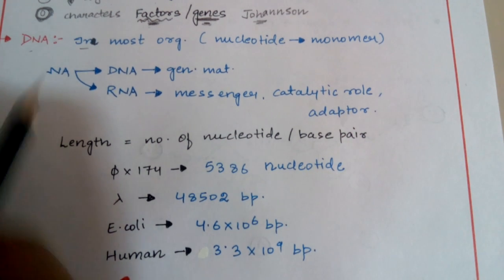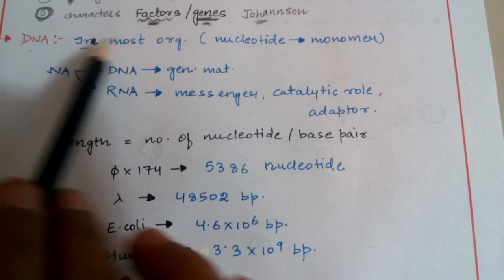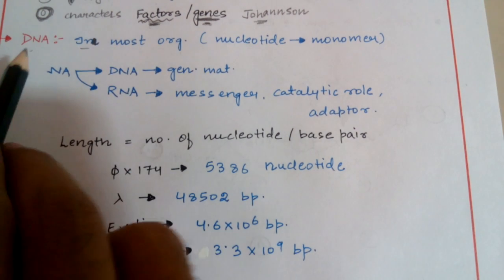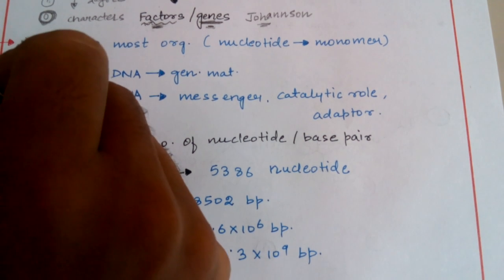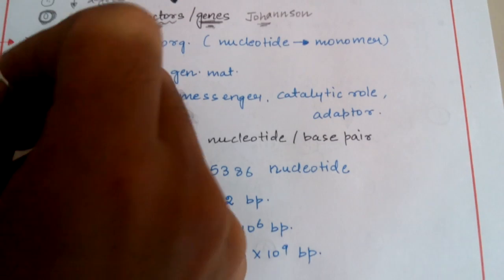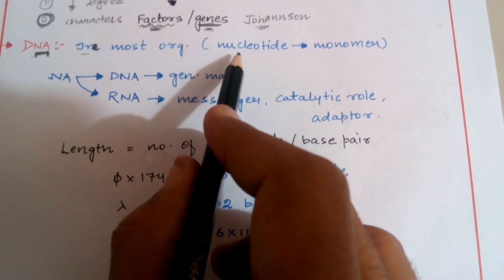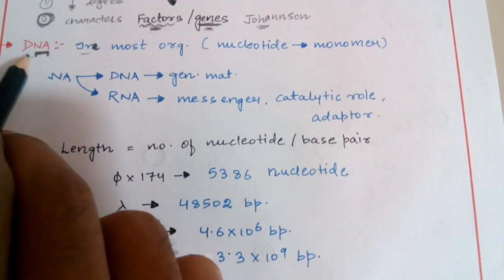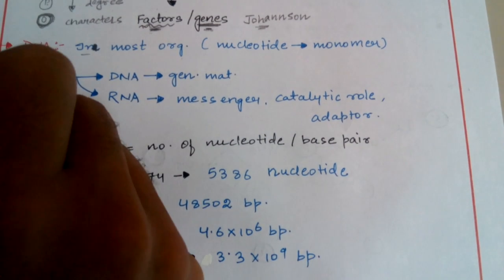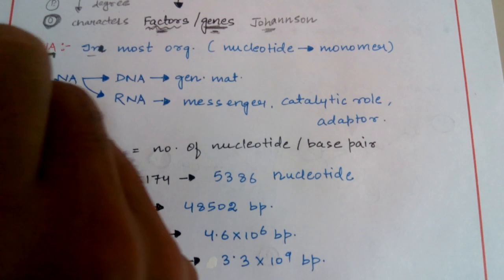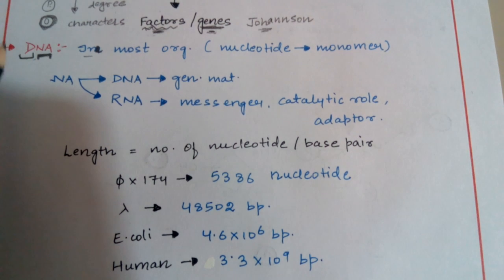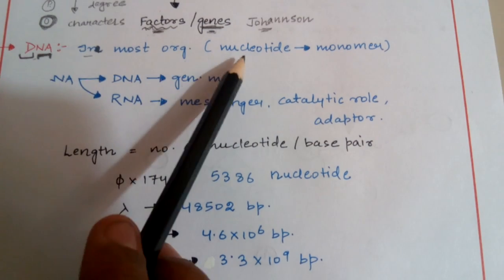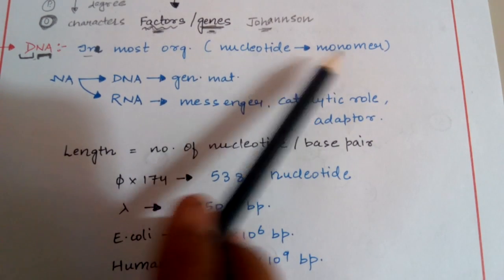DNA stands for deoxyribonucleic acid. Since it is a nucleic acid, it is formed of different monomers known as nucleotides. The nucleotides polymerize to form nucleic acid. In this particular genetic material, the sugar is deoxyribose, and because deoxyribose sugar is present, it is known as deoxyribonucleic acid — the genetic material in most organisms.